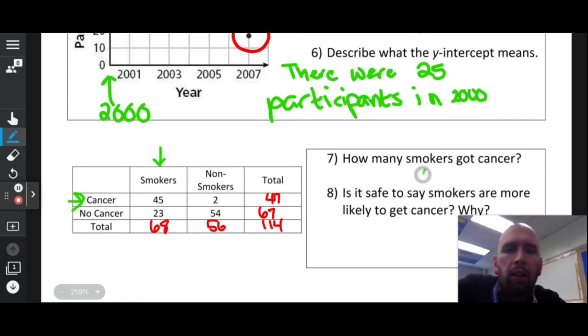Is it safe to say that smokers are more likely to get cancer? Well let's look at smokers versus non-smokers. 45 smokers got cancer and only two non-smokers got cancer. Yeah, I'd say it is more likely because of all the people who got cancer, 45 of them were smokers.